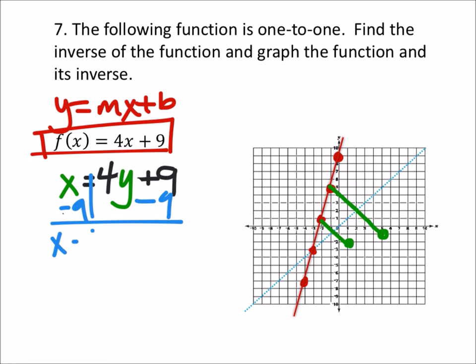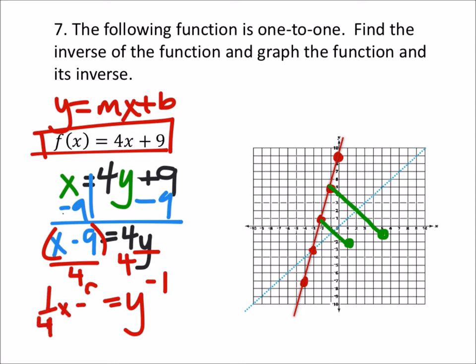Now I've got x minus 9 equals 4y, and then I can divide by 4 on both sides, so now I've got a y inverse function and I'm going to change this to a one-fourth x minus nine-fourths. I've just divided both those by 4.